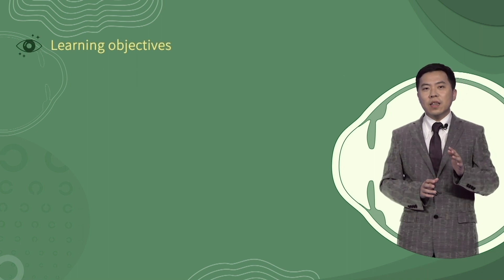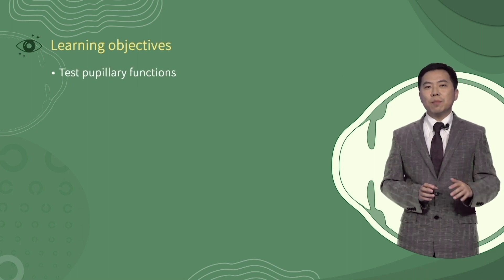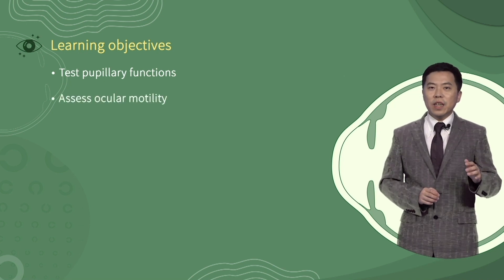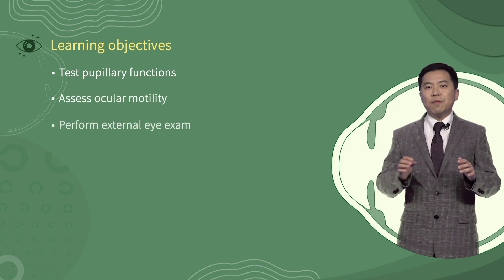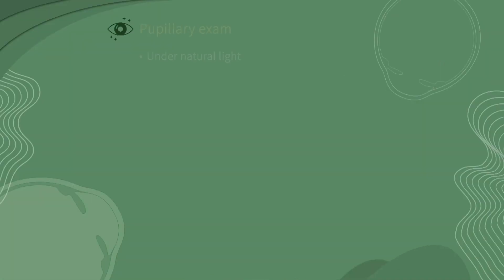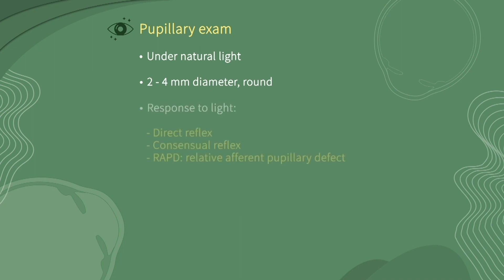The learning objectives are to master the measures of checking pupillary response, ocular motility, and perform an external eye examination. The normal pupil is around equal in size on both sides, about 2 to 4 mm in diameter, and responds to light.